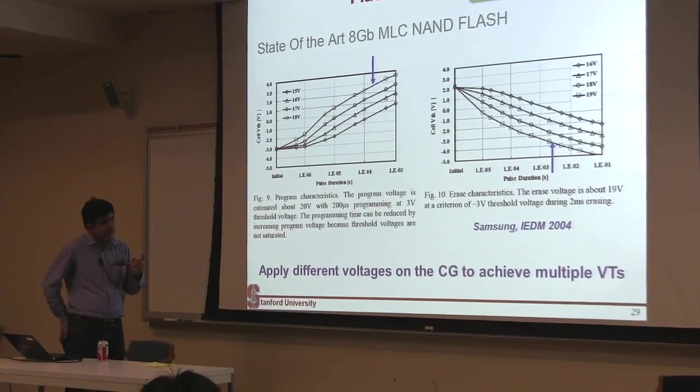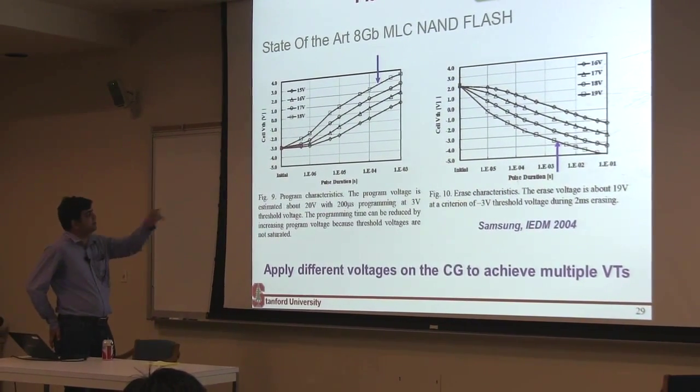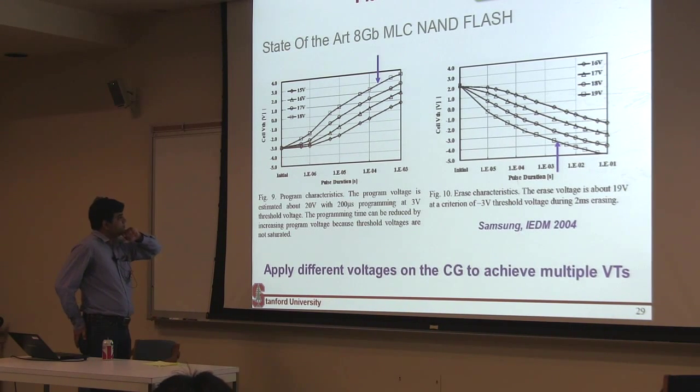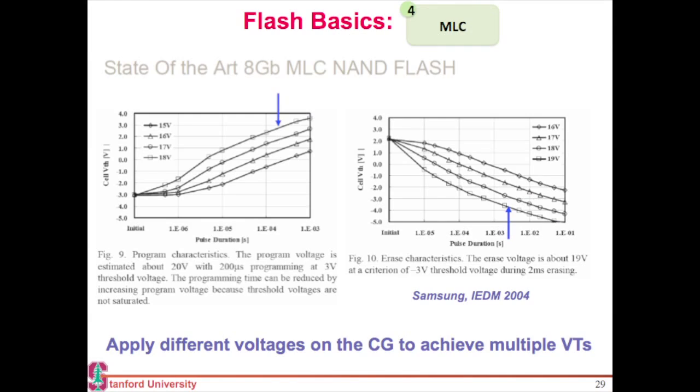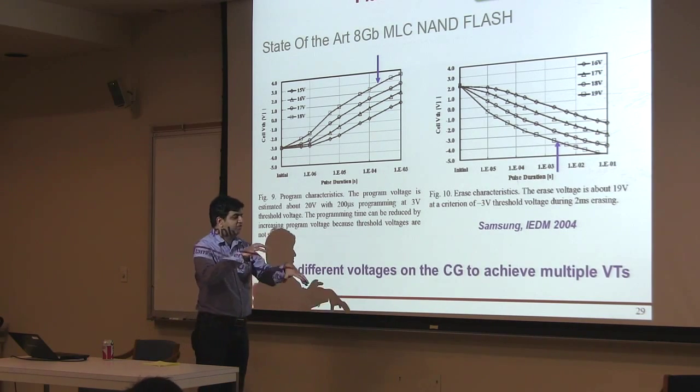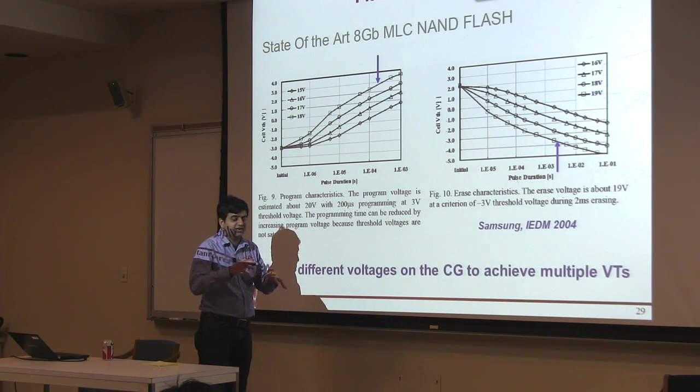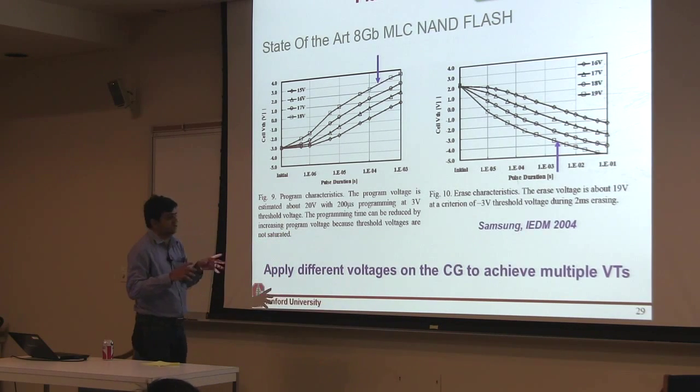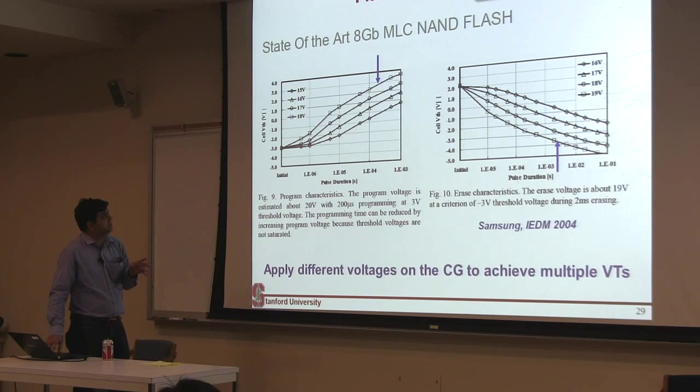Nonetheless, I'm not really making this up. This is an actual paper from Samsung. It shows the retention of these memory. And the way this was done was you apply different amount of voltages on your control gate. So if you apply 15 volt, you reach one state. If you apply 16 volt, you reach another threshold voltage. And that's the way people used to achieve this multi-level cell operation. So your controller, which is controlling this flash array, now has to generate multiple of these voltages. And that's usually not a very easy thing to do.